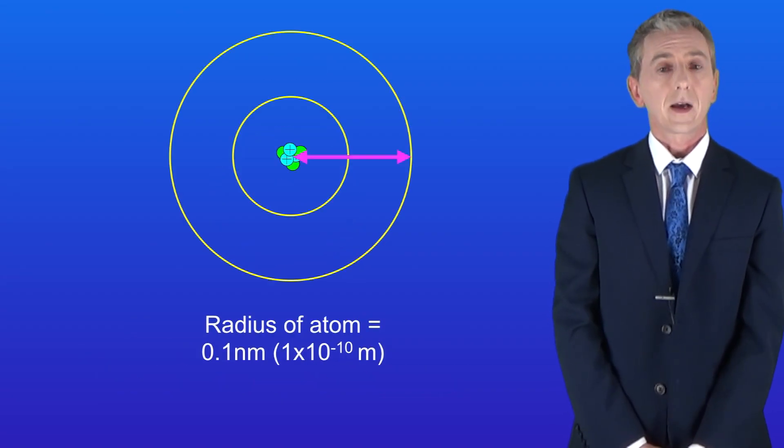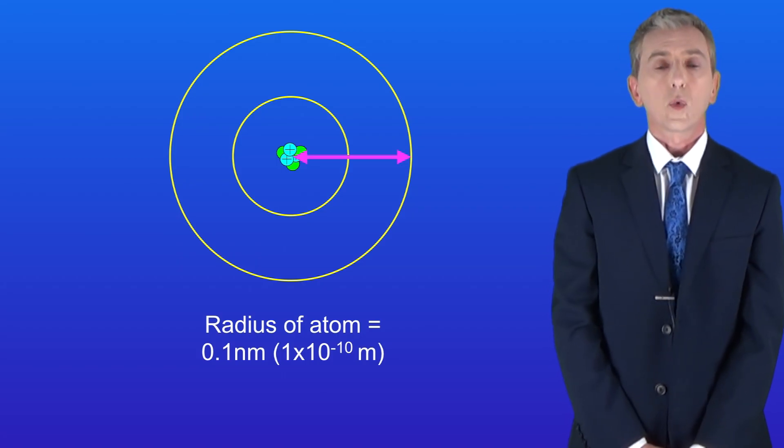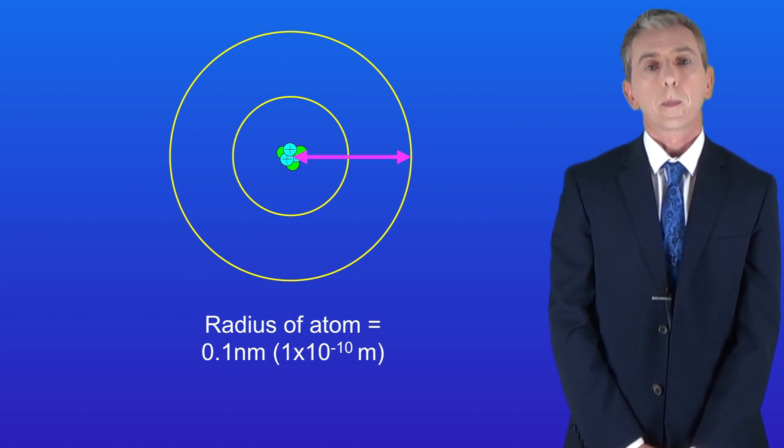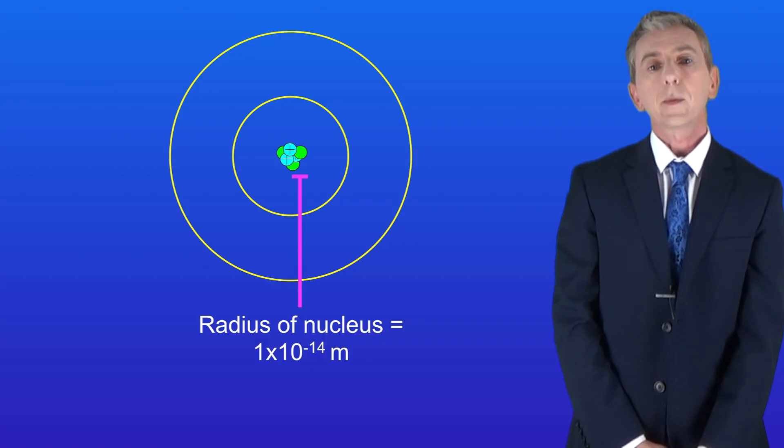Firstly the radius of an atom is around 0.1 nanometers. That's also written as 1 times 10 to the minus 10 meters. Obviously some atoms are larger than others so that's an approximate figure. The radius of the nucleus is less than 1 ten thousandth the radius of the atom at about 1 times 10 to the minus 14 meters.